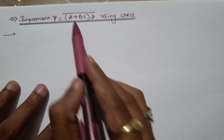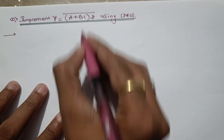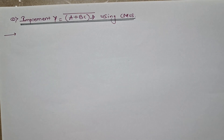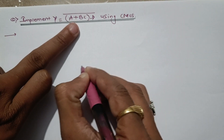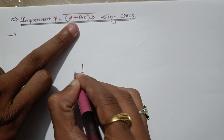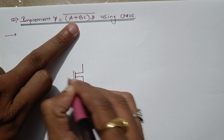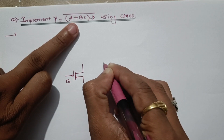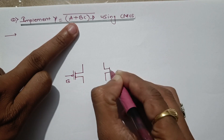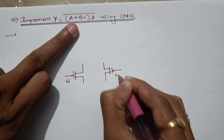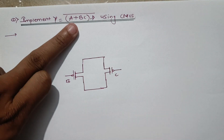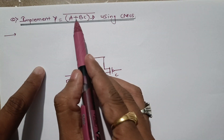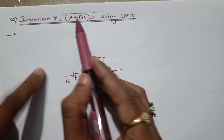Let's start. Y equals (A + BC · D) whole bar. First we'll implement B into C — this is multiplication. For multiplication, PMOS will be in parallel, so let's draw B and C in parallel with each other. This is a PMOS with input B, and this is a PMOS with input C — these two transistors arranged in parallel.